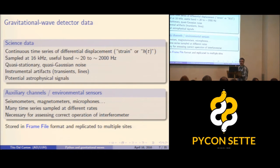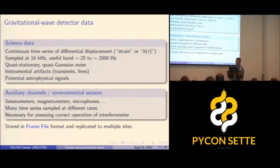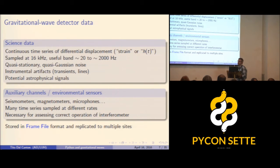There are also auxiliary channels connected to sensors spread around the interferometers — seismometers, magnetometers, microphones — all associated with time series sampled at different rates. They are necessary to investigate problems in the main science data. When we see a transient in the science data, we can look at the auxiliary channels to identify the cause. A special file format called Frame or GWF was designed for storing this data, packaged into frame files and shipped to different analysis sites such as Hannover where I work.